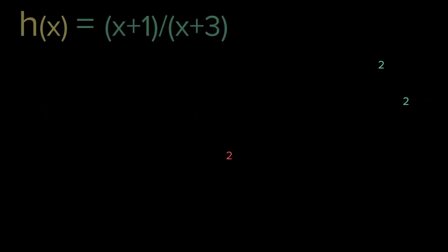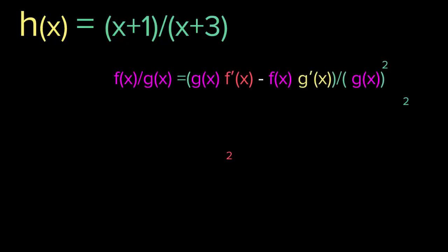Let me give you an example. Let's say we have h of x equaling x plus 1 over x plus 3. Here, x plus 1 is our f of x and x plus 3 is our g of x. According to the rule, to find the derivative of this function, you take the bottom function multiplied by the derivative of the top, minus the top multiplied by the derivative of the bottom, over the bottom squared.